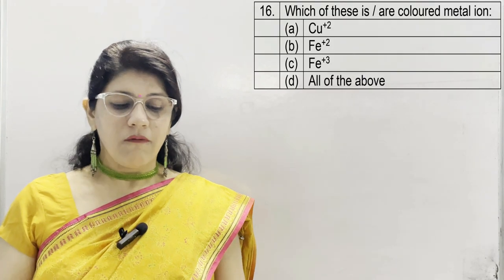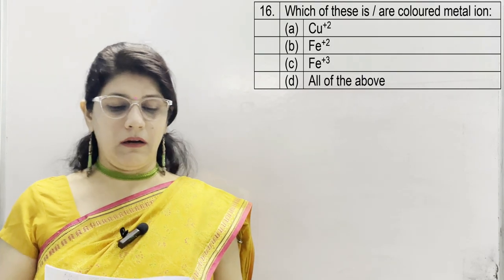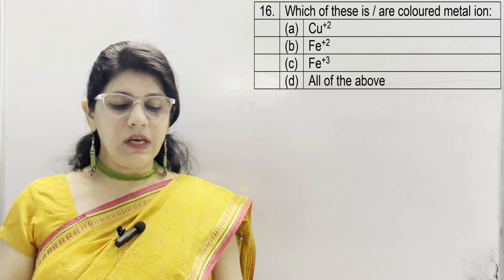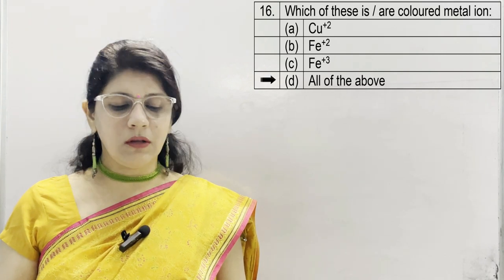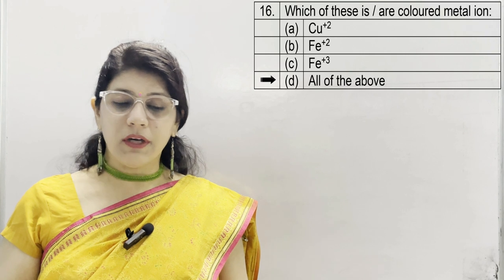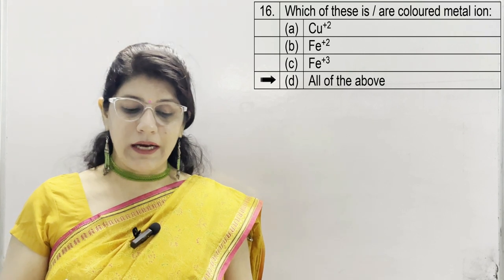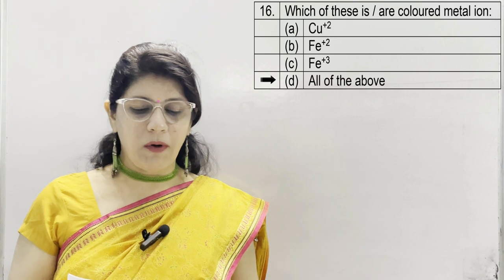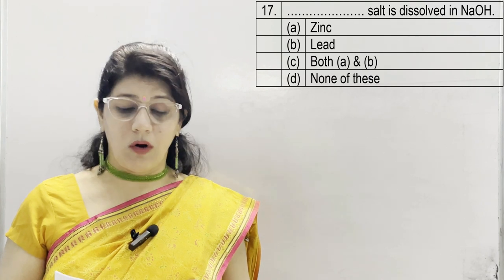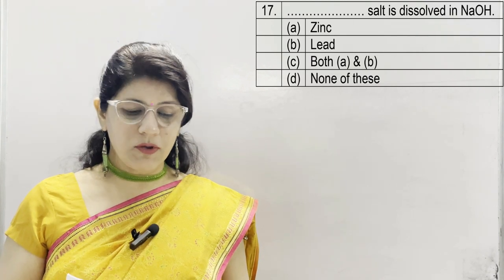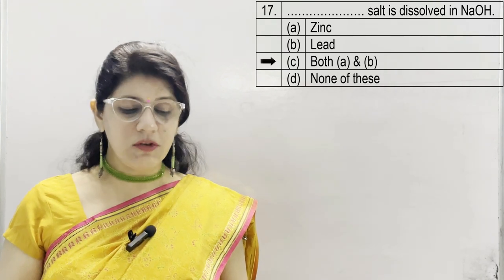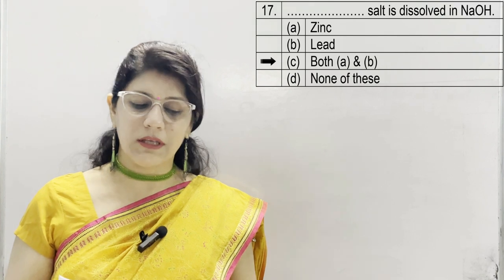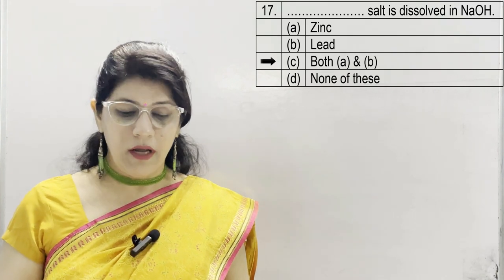In question 16, which of these is or are colored metal ions? A copper, B ferrous, C ferric, D all of the above. All three are colored: copper is blue, ferrous is light green, ferric is yellowish brown. So correct option is D. Question 17: dash salt is dissolved in NaOH. Options: A zinc, B lead, C both A and B, D none. Correct option is C — both lead and zinc salts dissolve in NaOH.